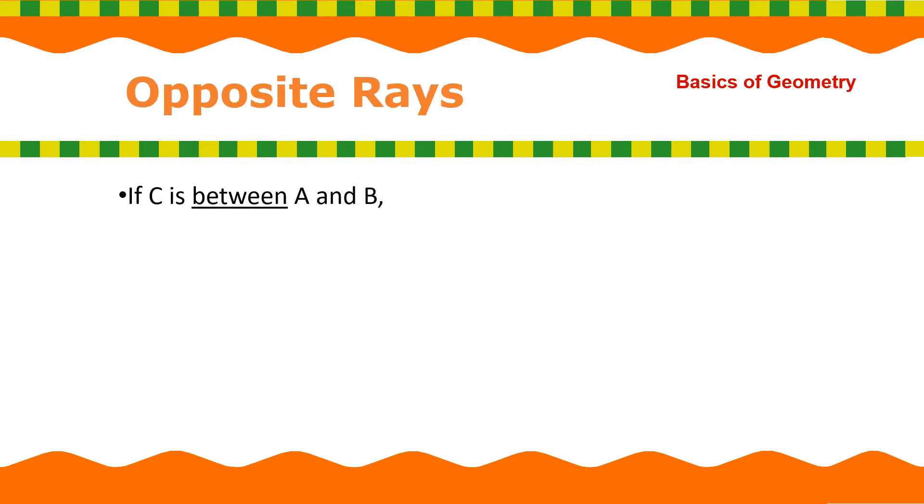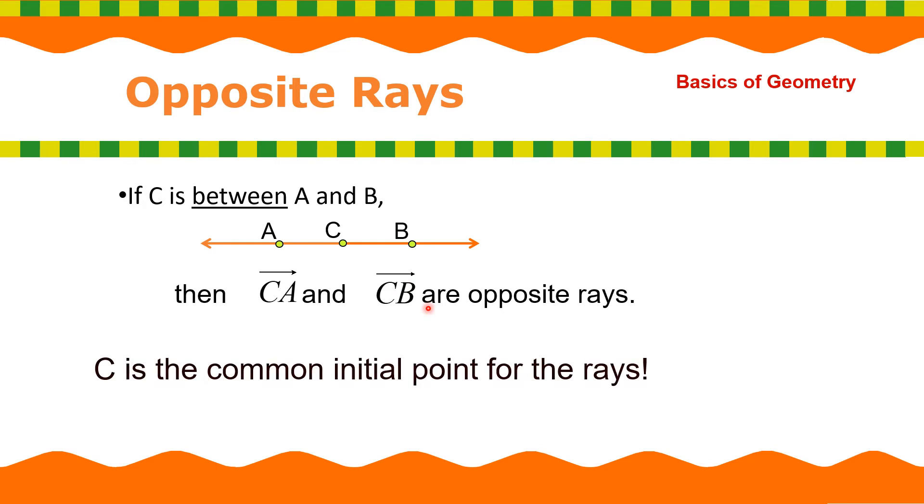Next, we have opposite rays. If C is between A and B, alright, we have then ray CA and ray CB are opposite rays. C is the common initial point for the rays.